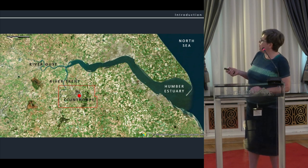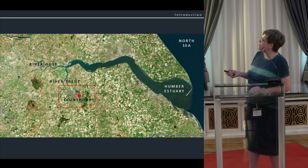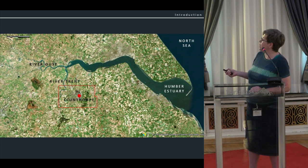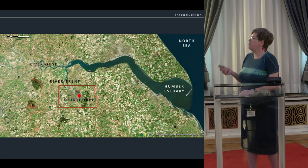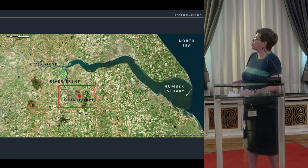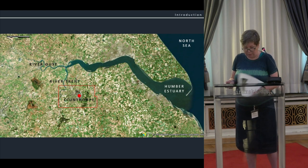Its position in relation to the Humber Estuary and these two big rivers will become clear. The River Trent comes down all the way through the Midlands to drain into the Humber Estuary in the North Sea, and the Ouse has lots of tributaries that fan out across from Yorkshire. So both of them have a very wide catchment area.